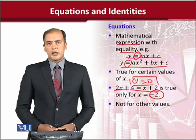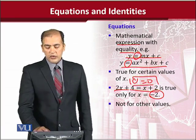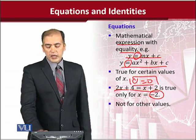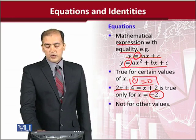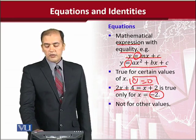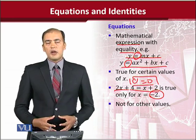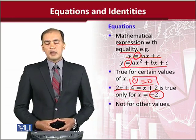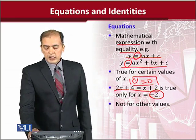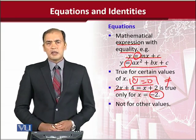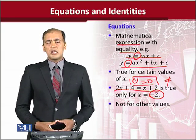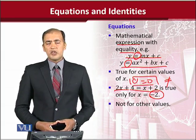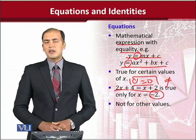But what if I put 1 in place of x? It will become 2 + 4 and 1 + 3, so they will not be equal. Equality will not be achieved — they will be in inequality. This is the salient feature of an equation.